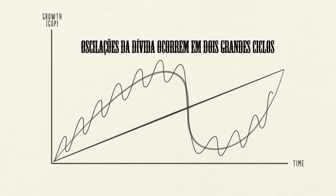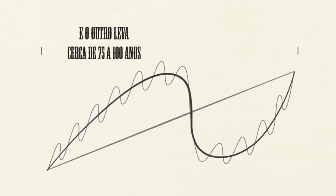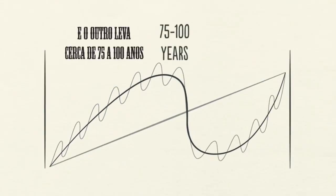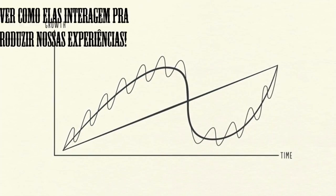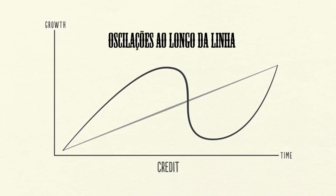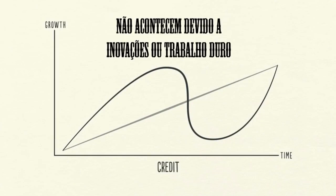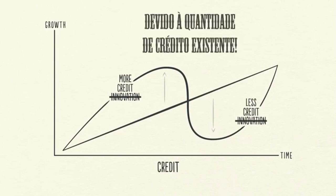Debt swings occur in two big cycles: one takes about five to eight years, and the other takes about 75 to 100 years. While most people feel the swings, they typically don't see them as cycles because they see them too up close — day by day, week by week. Swings around the line are not due to how much innovation or hard work there is; they're primarily due to how much credit there is.